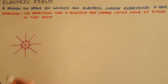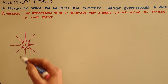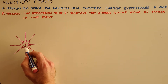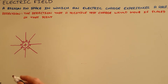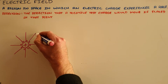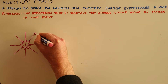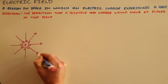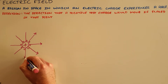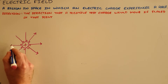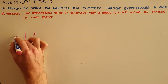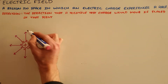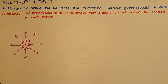Every electric field has a direction, which we define as the direction in which a positive test charge would move if placed at that point. Drawing the electric field around a positively charged object suggests that if we place a positive test charge at this point, it would be repelled away. So we show that a positive test charge would be repelled away from this charge.